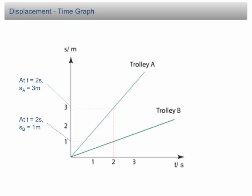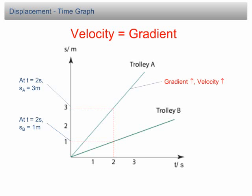Another information we can gather from the graph is the velocity. In a displacement time graph, the velocity of a motion is equal to the gradient of the graph. The higher the gradient, the higher the velocity. The lower the gradient, the lower the velocity.